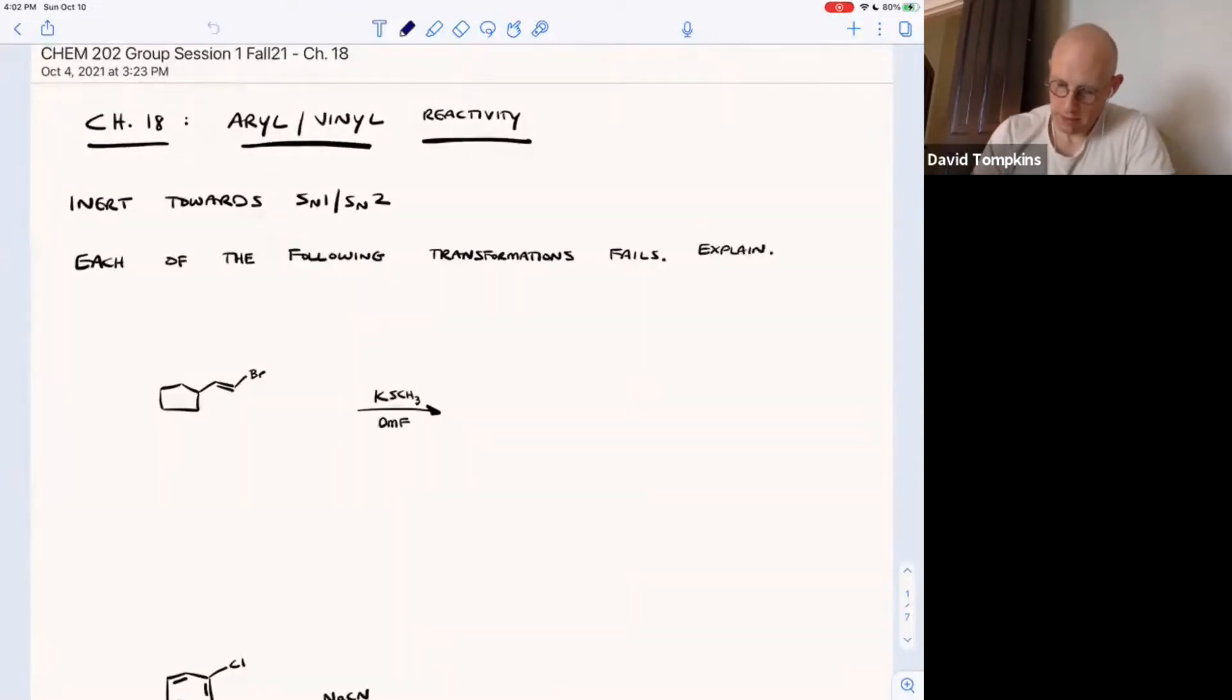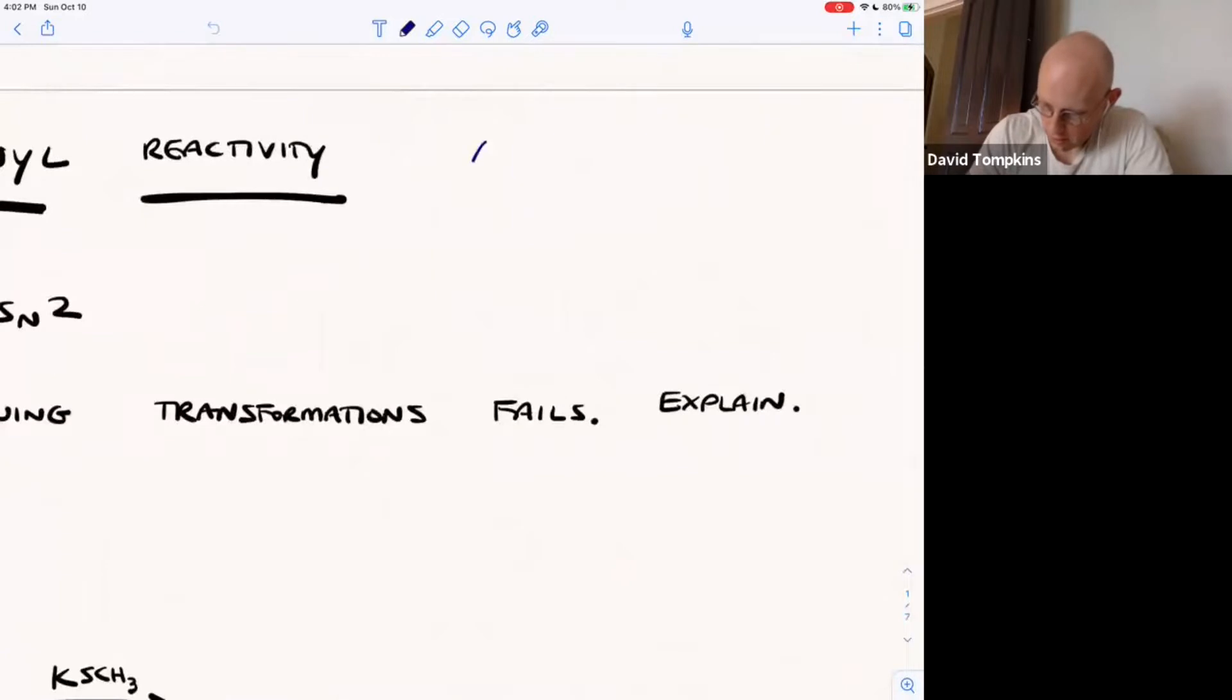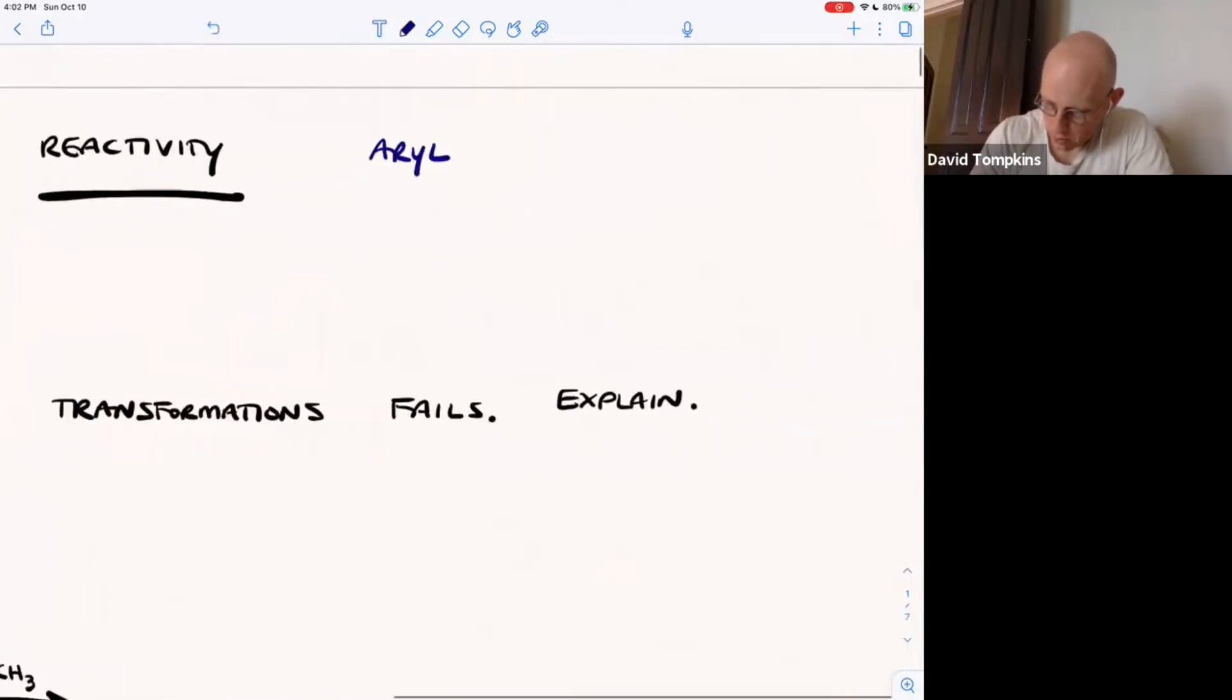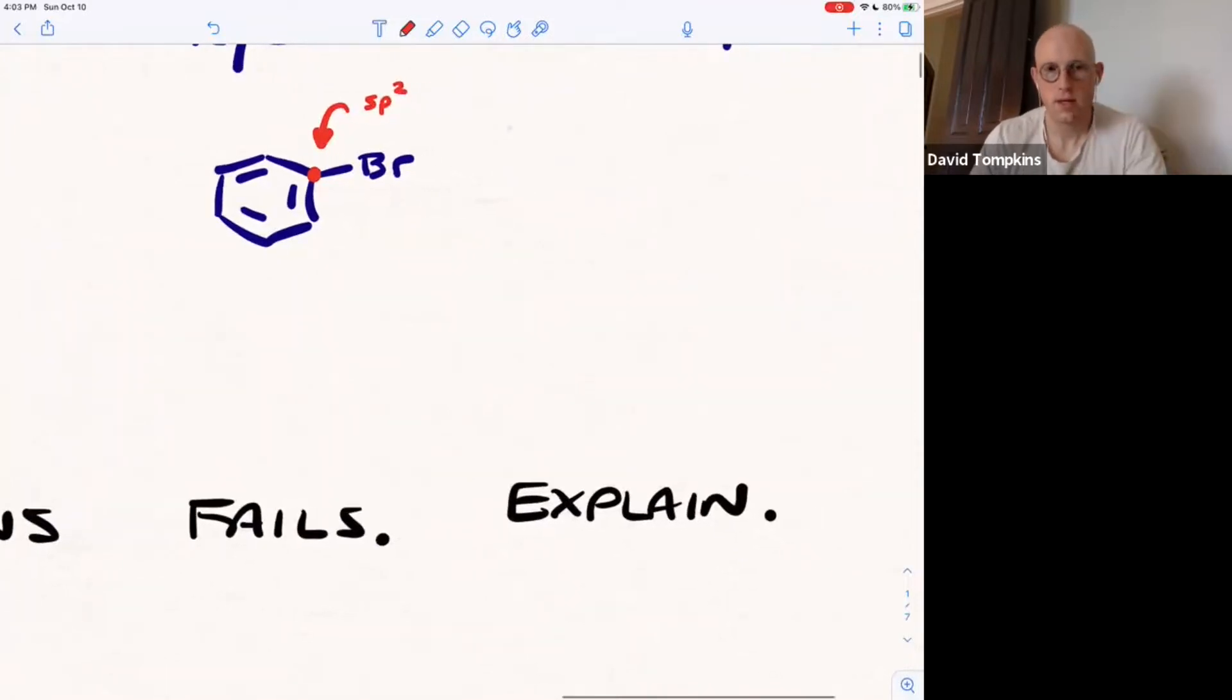So just starting with the definition first, aryl and vinyl halides. These are compounds where there's some degree of unsaturation. In the case of an aryl halide, there's going to be some sort of aromatic ring, like a benzene ring attached to a halogen, either bromine, chlorine, iodine, or fluorine. But the really important part to remember is that this carbon already has a pi system, or it's sp2 in hybridization.